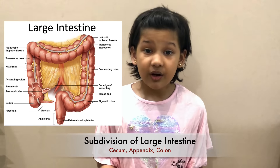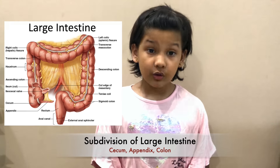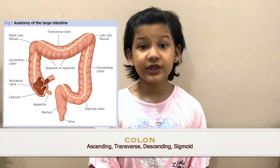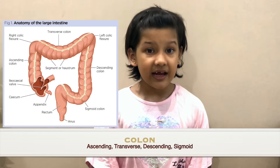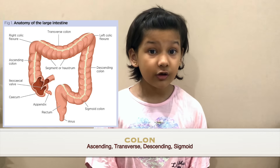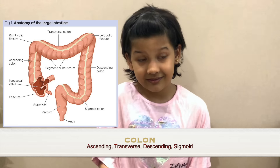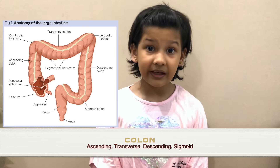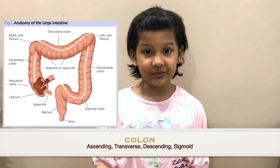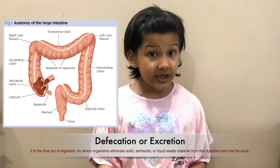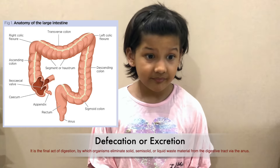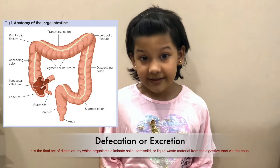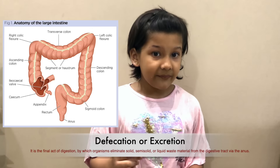The next component of the large bowel is the colon, which is divided into four parts: ascending colon, transverse colon, descending colon, and sigmoid colon. Most of the large intestine is made up of the colon. The colon still absorbs water from the waste, and then the waste gets stored in the rectum. When we feel the need to excrete, the anus expands and the waste comes out.